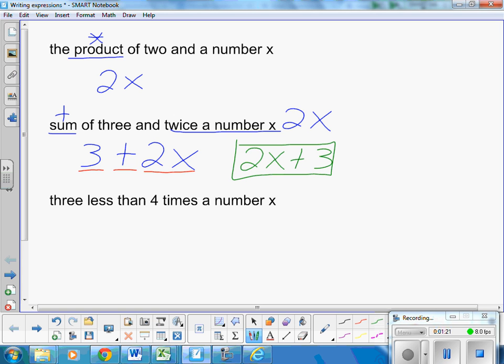Number 3, or the next one. 3 less than. Oh boy. Now this one you have to be careful for. 3 less than means I am going to subtract 3 away from something. That something is 4 times a number. 4 times a number is 4x. So what I have to have is 4x minus 3.